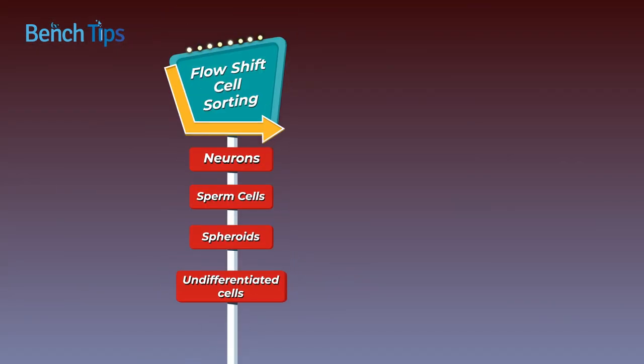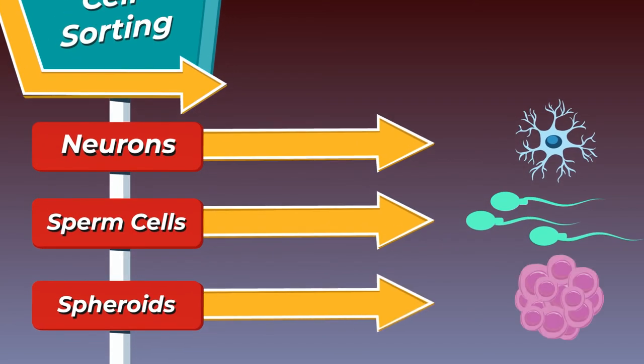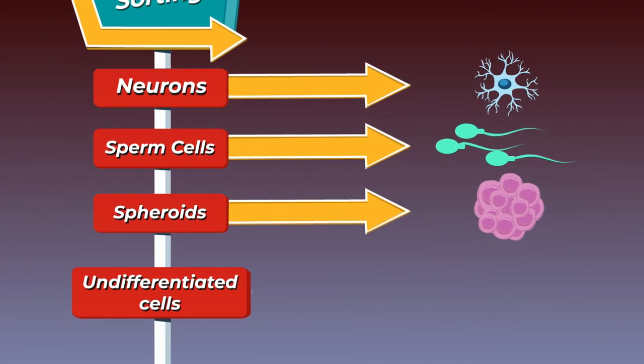These include sensitive cell types such as neurons and sperm cells and large particles such as spheroids. Flow shift cell sorting has also been successfully used to remove rare, undifferentiated cells from iPSC.